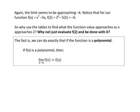Well, that's a very interesting point. So let's go ahead and take a look at the following. It says again the limit seems to be approaching negative 6. Notice that for our function f of x equals x squared minus 5x, for f of 2 we get negative 6. So why use table of values when you can just evaluate this? The fact is we can do exactly that.